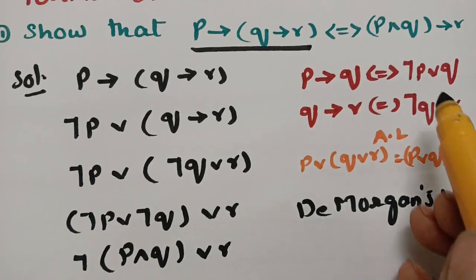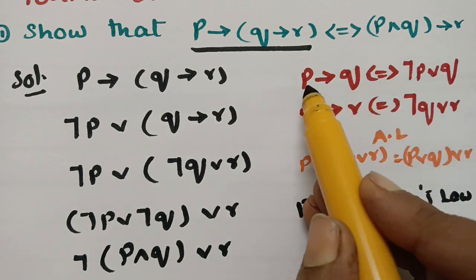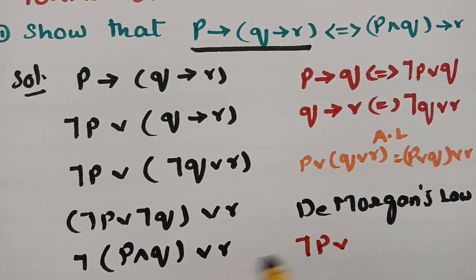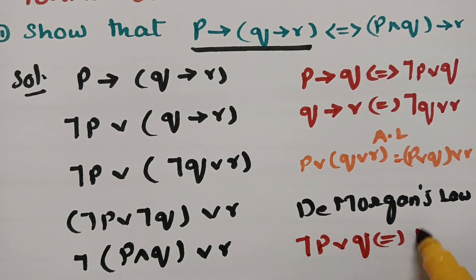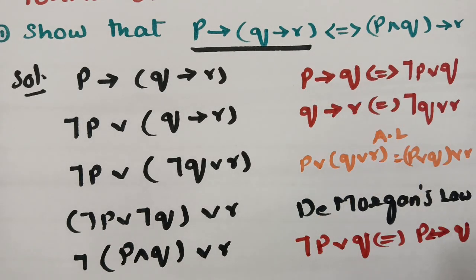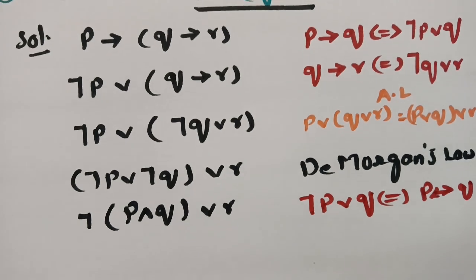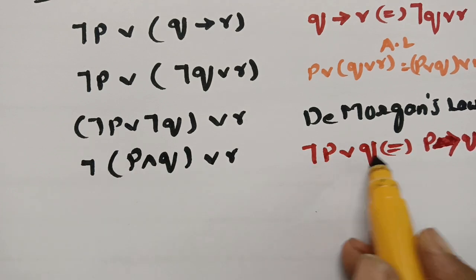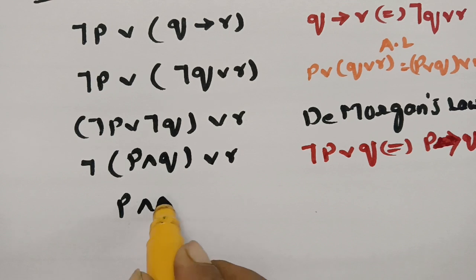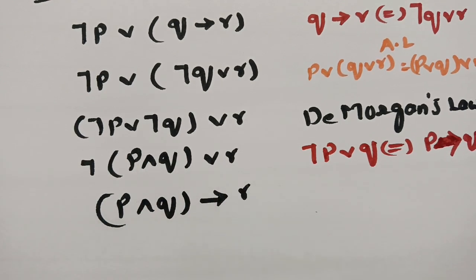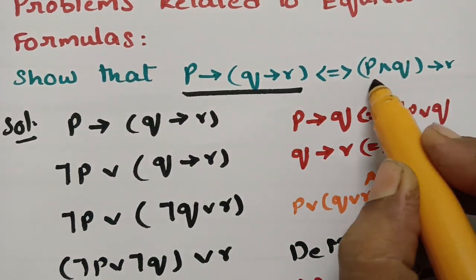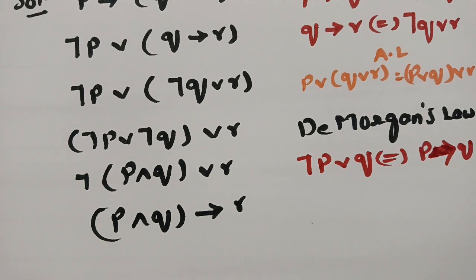Now I need the formula: negation P or Q can be written as P implies Q. Here, negation P or R can be written as P implies R. So this whole part — where P and Q is taken together as one term — gives us (P and Q) implies R. We got both sides: the LHS P implies (Q implies R) is equivalent to (P and Q) implies R.